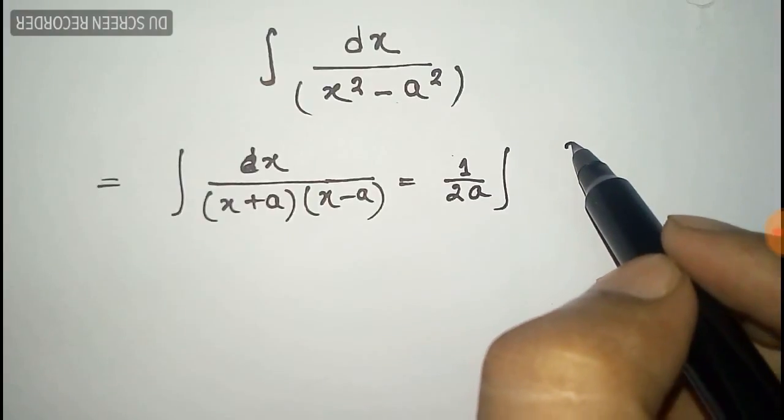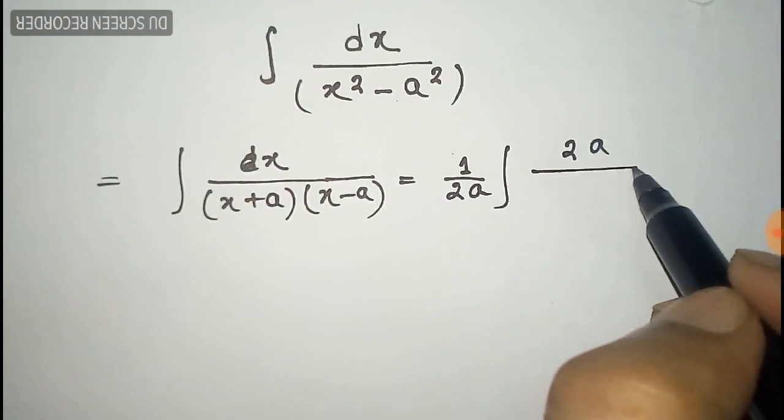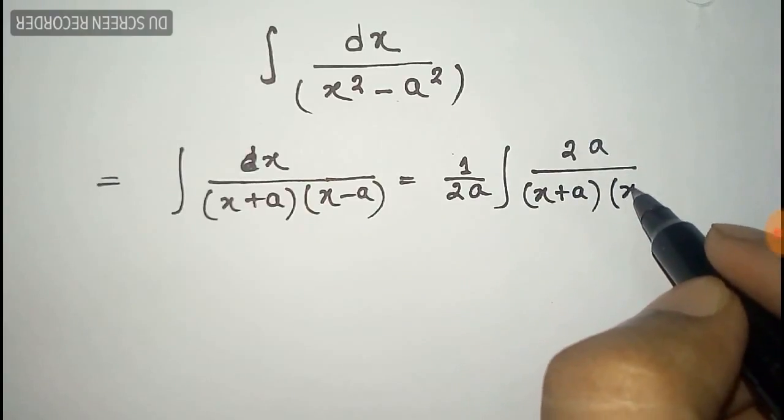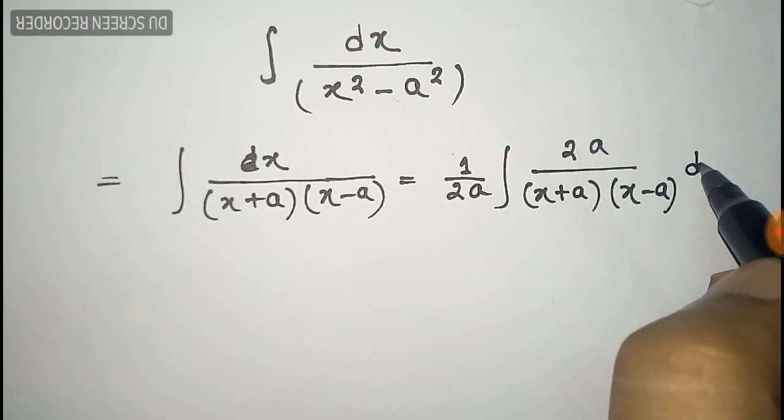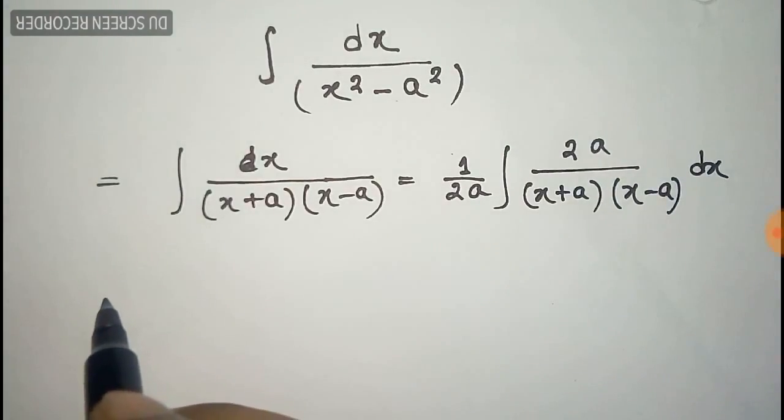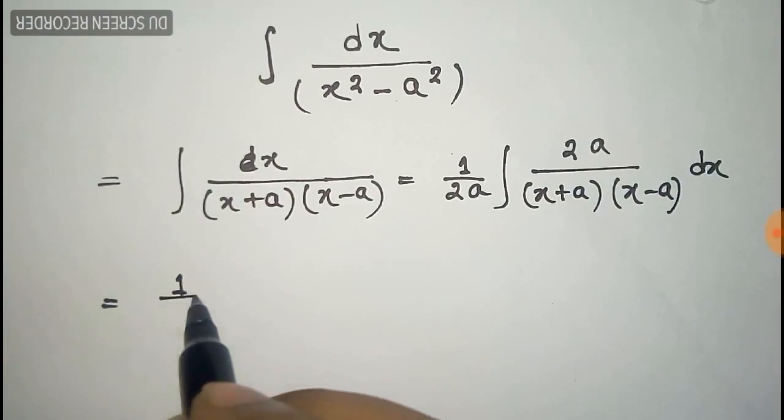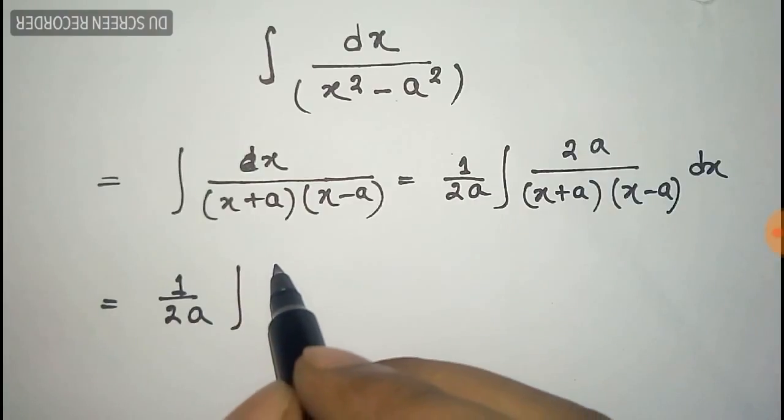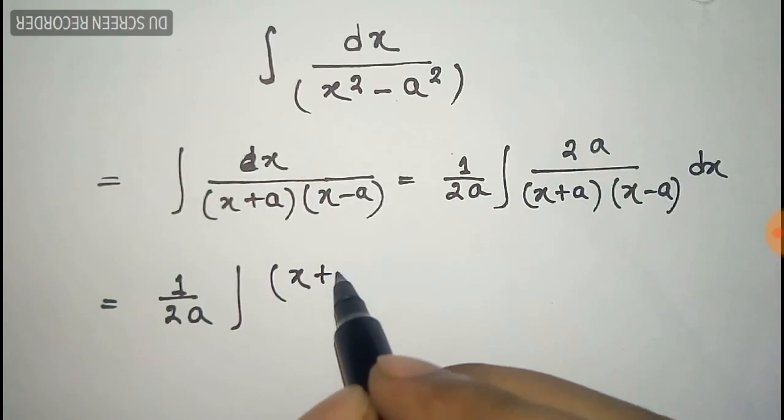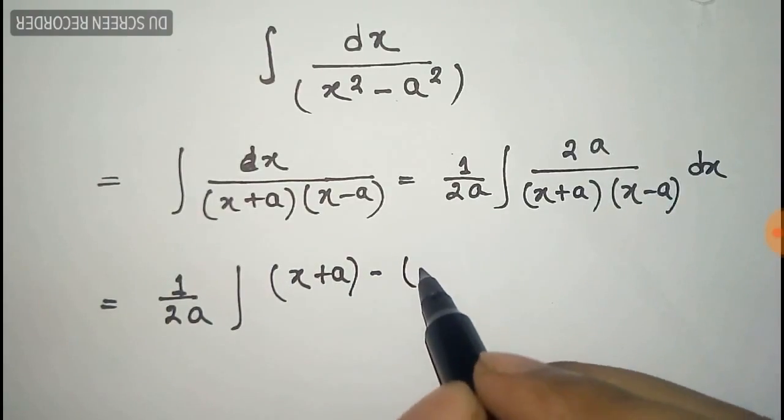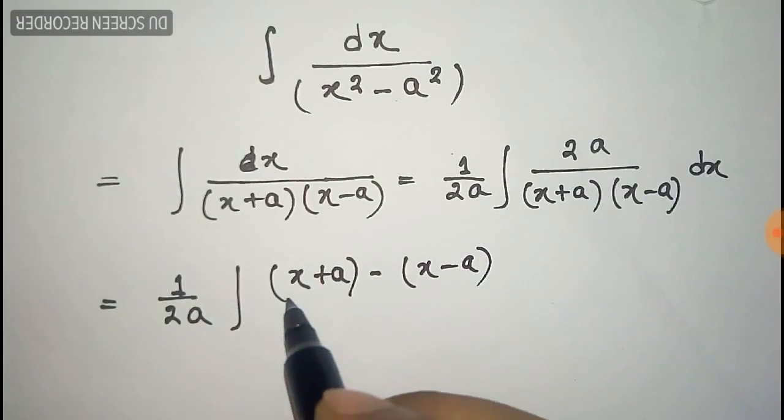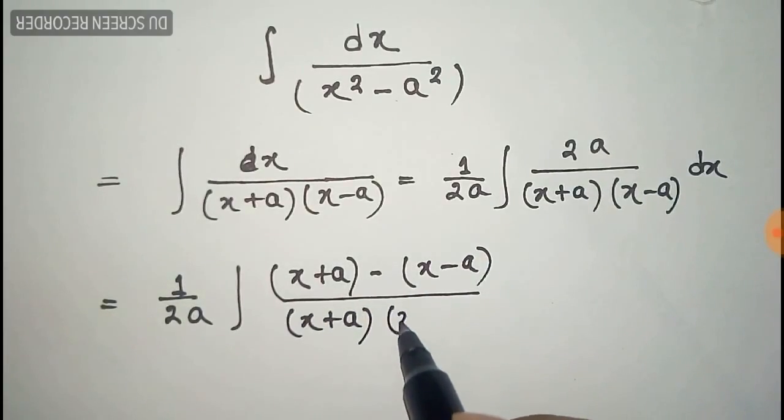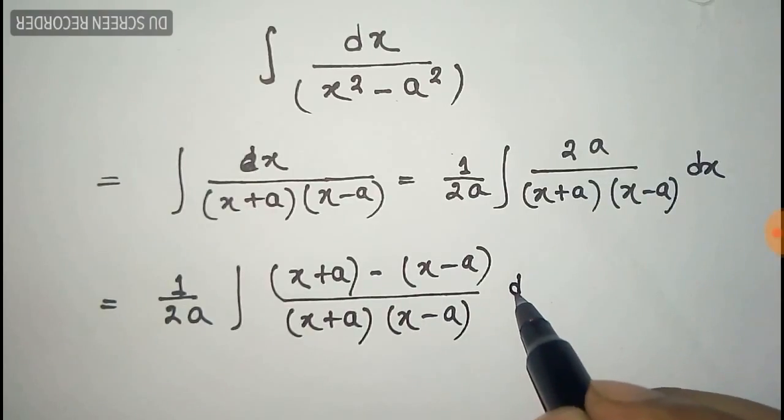So there will be another two a. Now we can write this two as the subtraction of x plus a minus x minus a. Similarly, the x plus a and x minus a into dx.